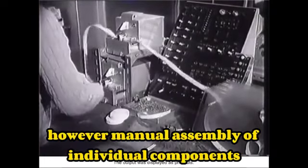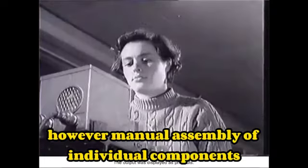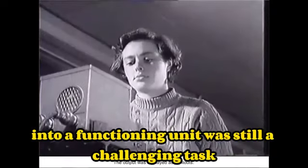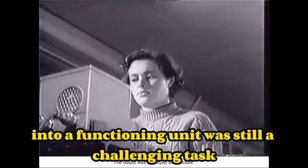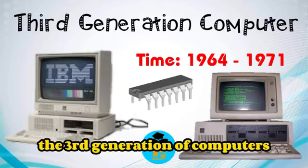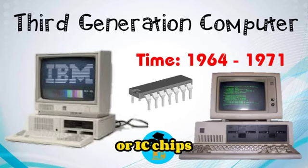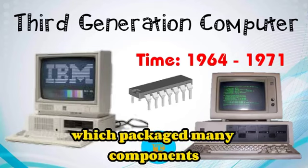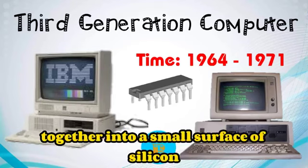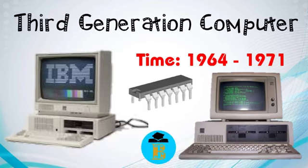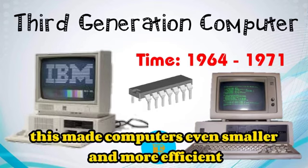However, manual assembly of individual components into a functioning unit was still a challenging task. The third generation of computers used integrated circuits or IC chips, which packaged many components together into a small surface of silicon. This made computers even smaller and more efficient.